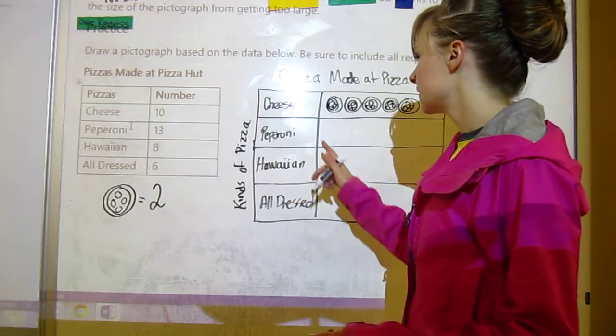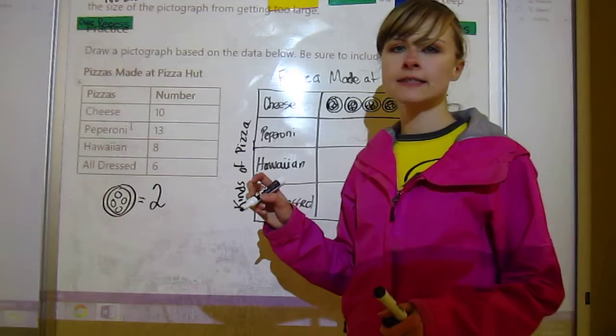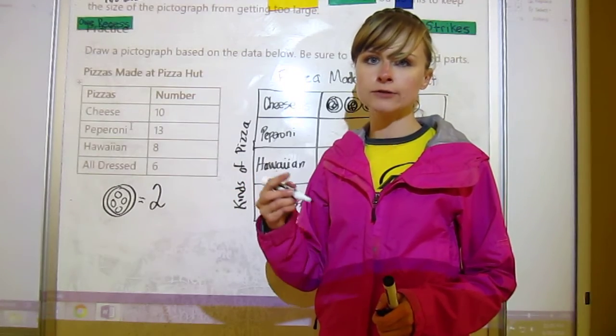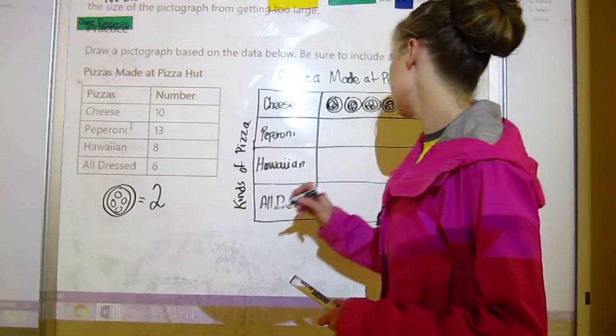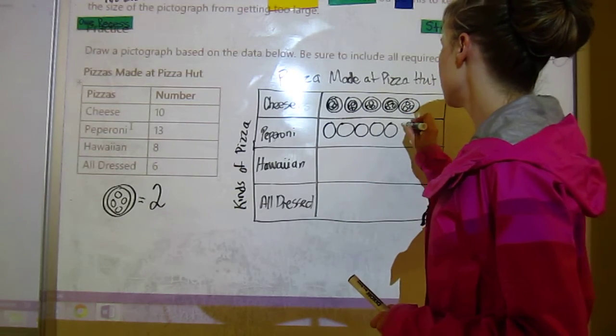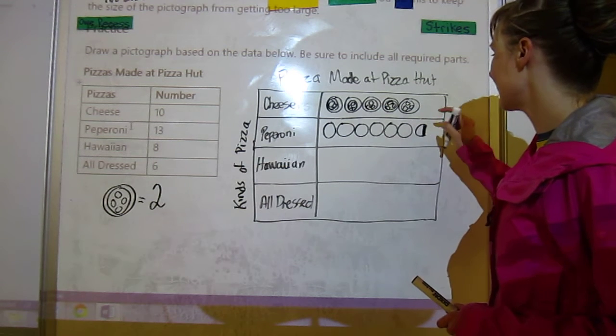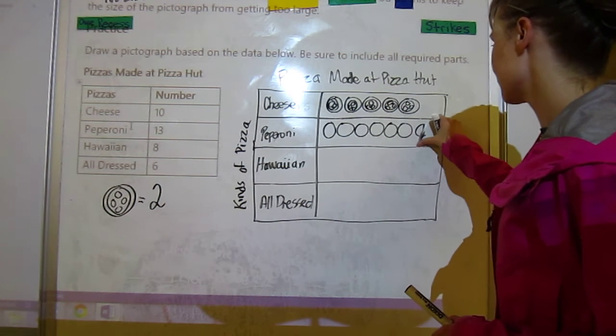Pepperoni has 13, so that means one less than that is 12, so we need to draw six full ones and one half one. So one, two, three, four, five, six, and there's my half - doesn't really look like a half.